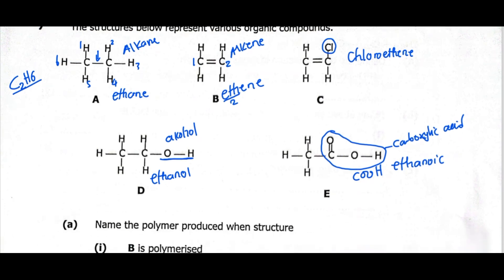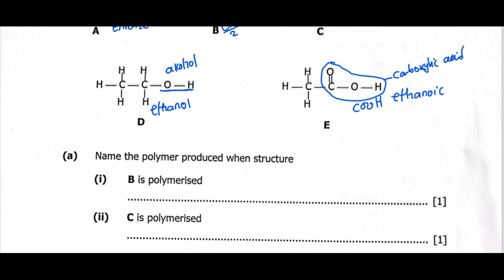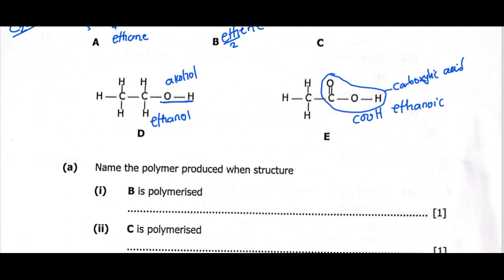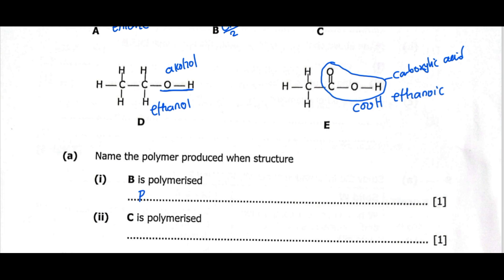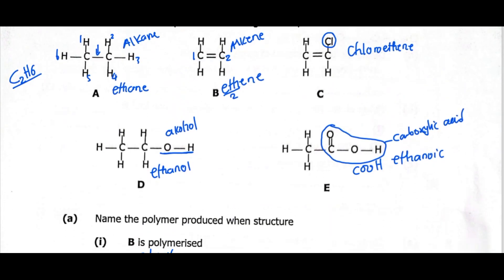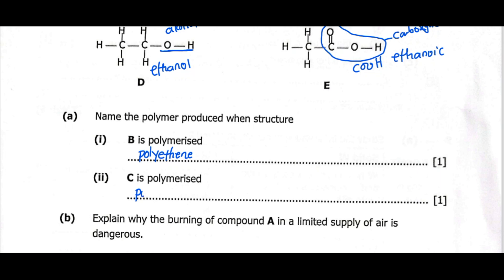Name the polymer produced when structure B is polymerized. Structure B is ethene. Whenever you name a polymer, you begin with the prefix poly, then add the monomer. So B is the monomer, which is ethene — we have polyethene. For C, the monomer is chloroethene, so this will be polychloroethene. That is how you name a polymer: add the prefix poly plus the monomer name.